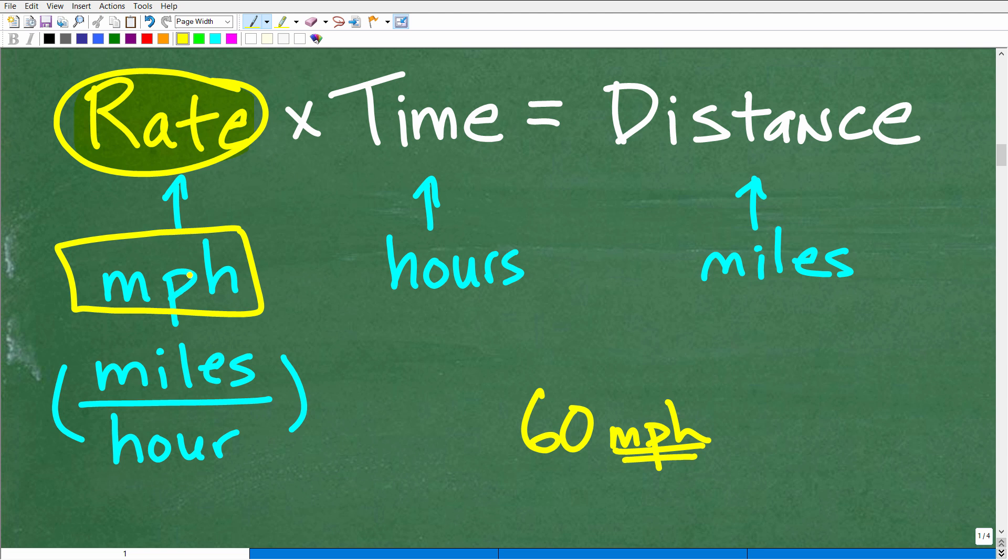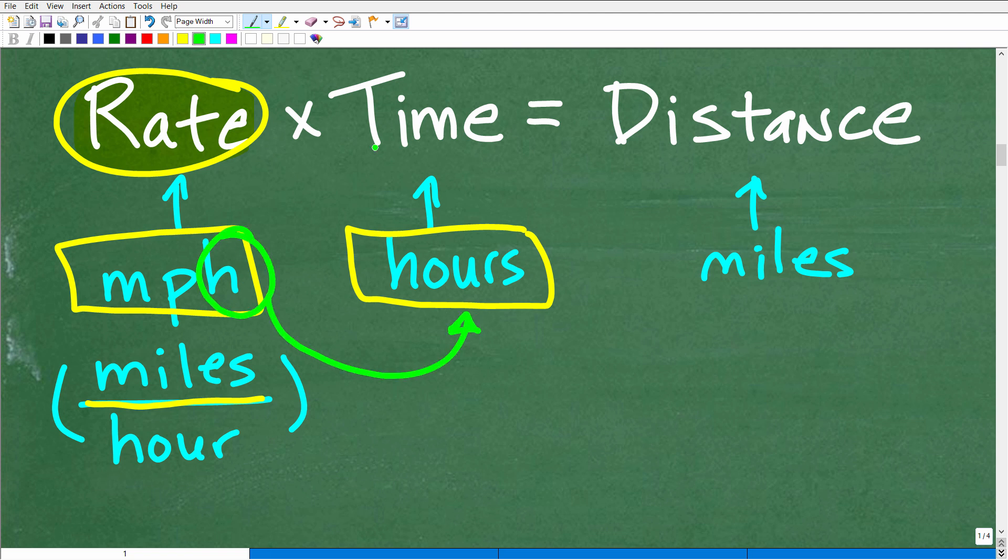Miles per hour means miles per - when you have this per, that's indicating a division sign. This is a technical rate in mathematics: a fraction where the units of measure between the numerator and denominator are different. We're dealing with miles as our unit of measure for distance and hour as a unit of measure of time. If we're given our rate or speed in miles per hour, then our time needs to be in hours, and our distance measurement has to be in miles.